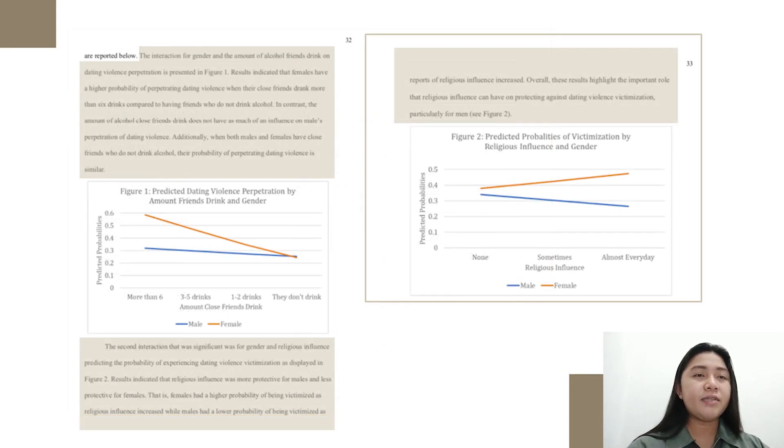Now, in presenting the data, we are not always going to present the data in a table. We can also present the data in a variety of formats, including graphs. And in this paper, the researcher also includes graphs for figure 1 and 2. The interaction, this is for figure 1, the interaction for gender and the amount of alcohol friends drink on dating violence perpetration.